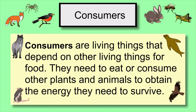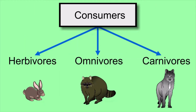Consumers eat other plants and animals to obtain the energy they need to survive. Most animals are consumers. Consumers can be divided into three groups: herbivores, omnivores, and carnivores.